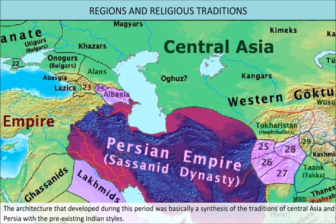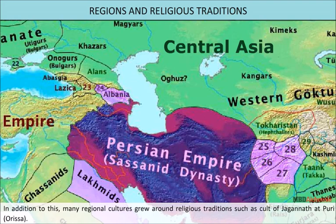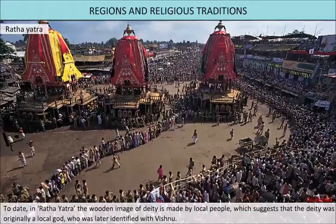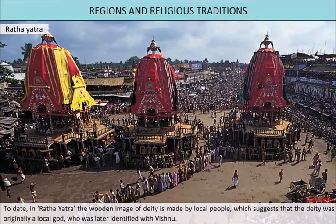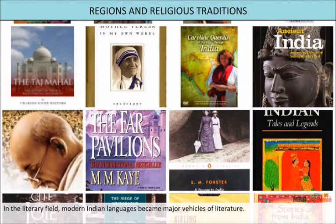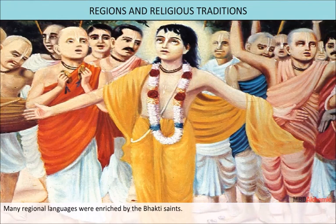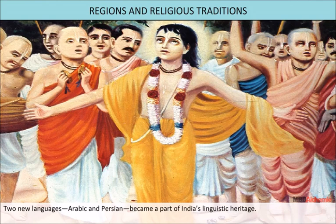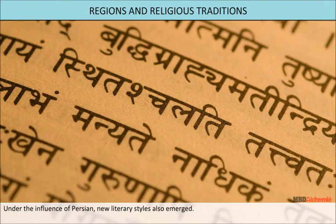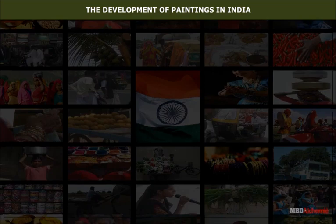This period also saw the introduction of new features in the art and architecture of India. The architecture that developed was basically a synthesis of the traditions of Central Asia and Persia with pre-existing Indian styles. Many regional cultures grew around religious traditions, such as the cult of Jagannath at Puri, Orissa, where during the Ratha Yatra the wooden image of the deity is made by local people, suggesting the deity was originally a local god later identified with Vishnu. Similarly, the Bangla dome developed in temple architecture in Bengal. In the literary field, modern Indian languages became major vehicles of literature, enriched by the Bhakti saints. Arabic and Persian also became part of India's linguistic heritage, replacing Sanskrit as the court language in many areas, and under Persian influence new literary styles emerged.